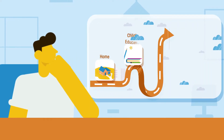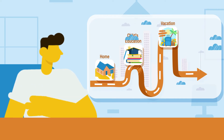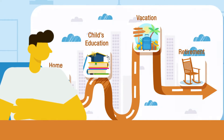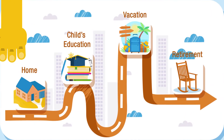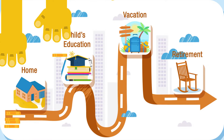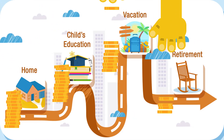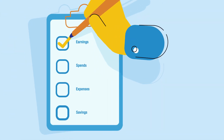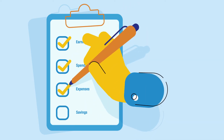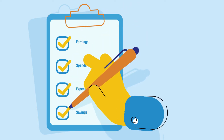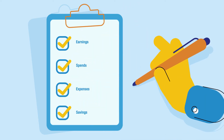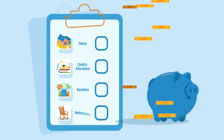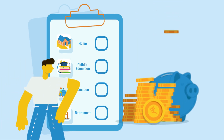We all have life's goals and dreams that we wish to achieve. Planning to reach these goals requires financial support, which in turn requires carefully planned earnings, spends, and other expenses. This is smart financial planning.